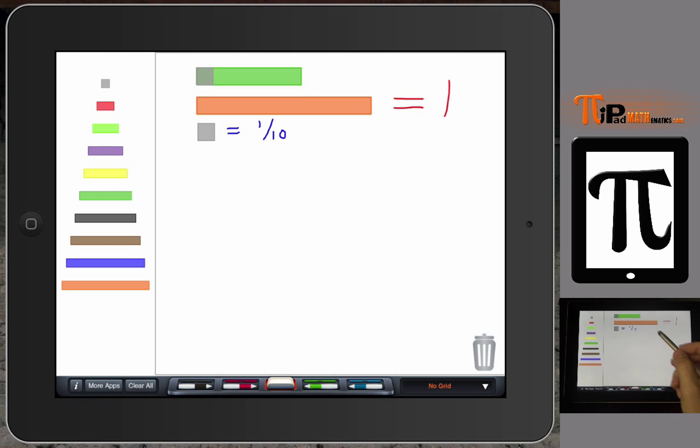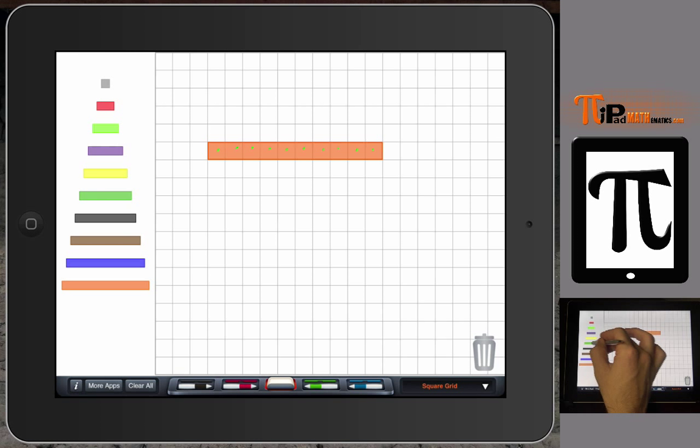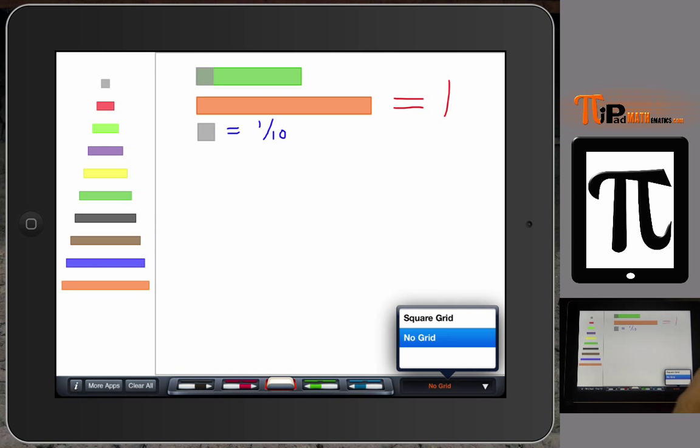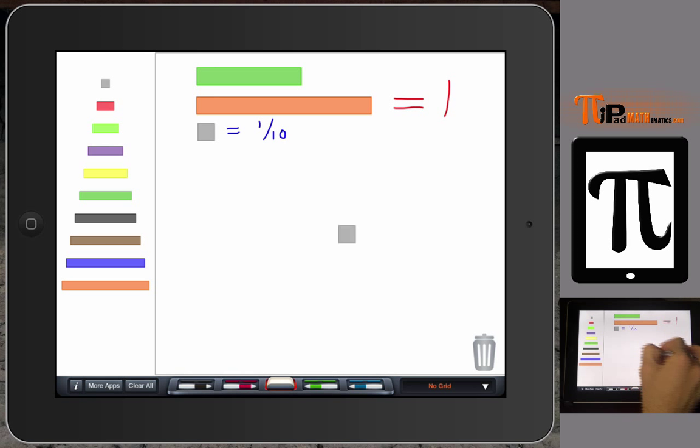We find out how many of these go into our dark green rod. Now I know because of experience that it takes six, but students can explore that by bringing in the white rods and putting them on top of your dark green rod to find out how many fit in there, or we can use our square grid. When it clicks in we can see that there's one, two, three, four, five, six white rods that make up your dark green rod. And so when we go to our, once this starts working, I gotta take the pen off, no grid, now our dark green rod is going to equal six tenths.